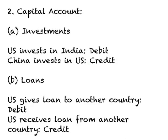The second part of the capital account is loans. Suppose the US gives a loan to another country — the US is paying money to that country — so a US loan to another country is considered a debit side entry. If the US receives a loan from another country, this will be considered a credit side entry. So the capital account has two components — investments and loans — and you should be able to identify debit and credit side entries.